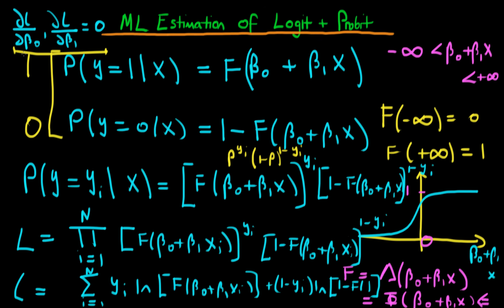Typically we need some sort of iterative computational search to find the values of beta 0 and beta 1 which satisfy those conditions as closely as possible. Fortunately, we don't have to do this ourselves — we just tick a box in whichever statistical software we're using, and the computer searches through the parameter space for us, reporting back the values of beta 0 and beta 1. I hope this video has provided some background on what the likelihood is and what the computer is actually searching over.